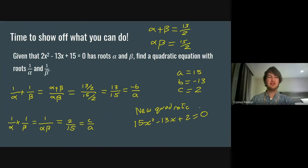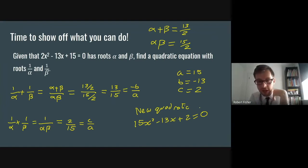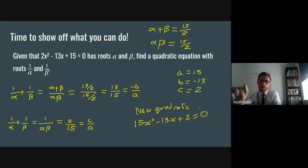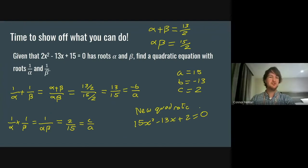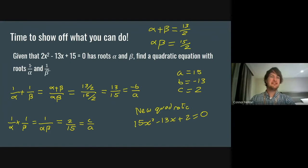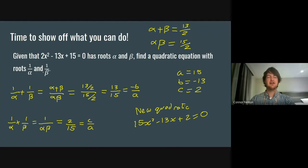Especially if you were told not to work out the roots, this is pretty much the only method you can use. You found the sum and product from the old equation and then found the sum and product of the new roots. You can do the same thing for all of them — so rather than roots 1/α and 1/β, it could have been 2α and 2β, which is very much like what we had at the very beginning when we looked at transformations. With 2α and 2β you can see that's a stretch scale factor 2 in the x direction. But 1/α and 1/β are not really any simple transformation like that — you can't quite use the same conceptual way of thinking about it.